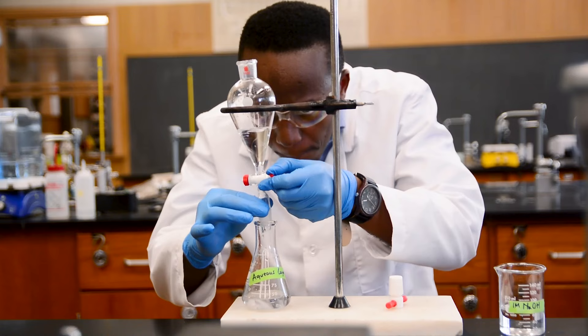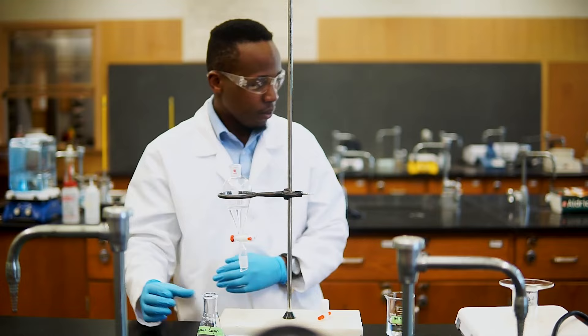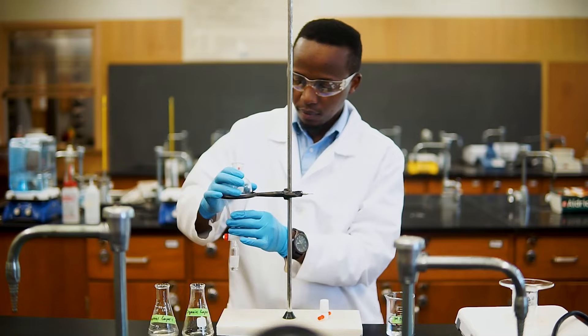You have now separated the two layers. The top layer can be removed by pouring it through the top of the funnel into a separate flask. Be sure to pour it out the top and not through the stopcock, as pouring out the bottom would contaminate it.